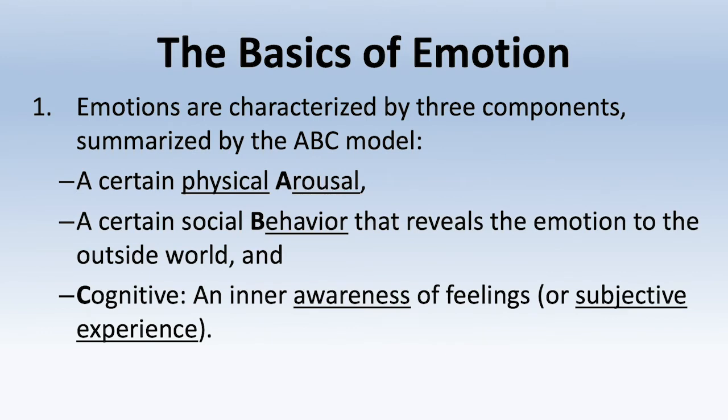Emotions are characterized by these three components, summarized by the ABC model. A is a certain physical arousal. B is a certain social behavior that reveals the emotion to the outside world. And C for cognitive, which also refers to the inner awareness of our feelings — the subjective experience, how we label it.